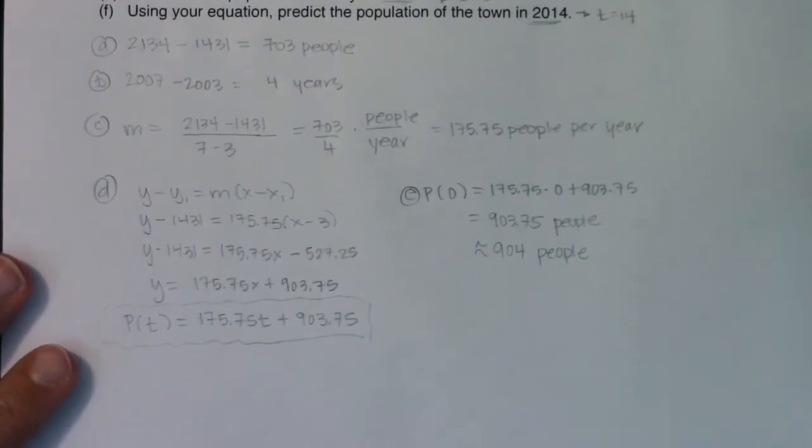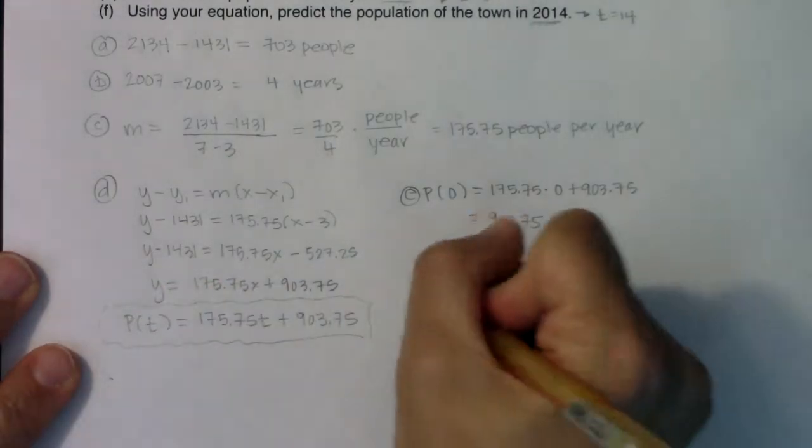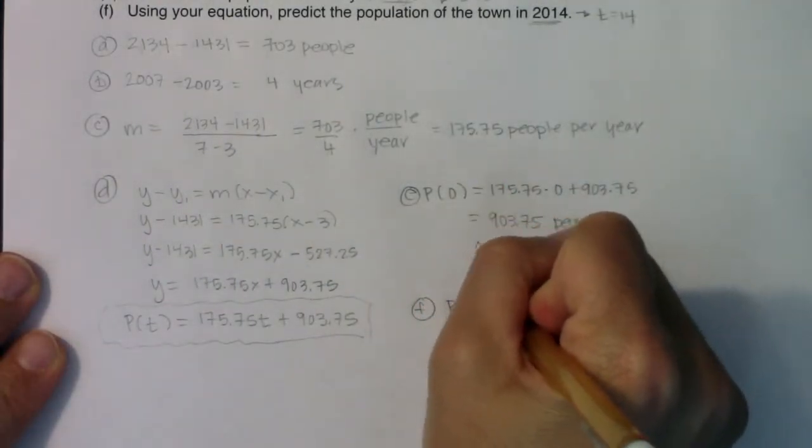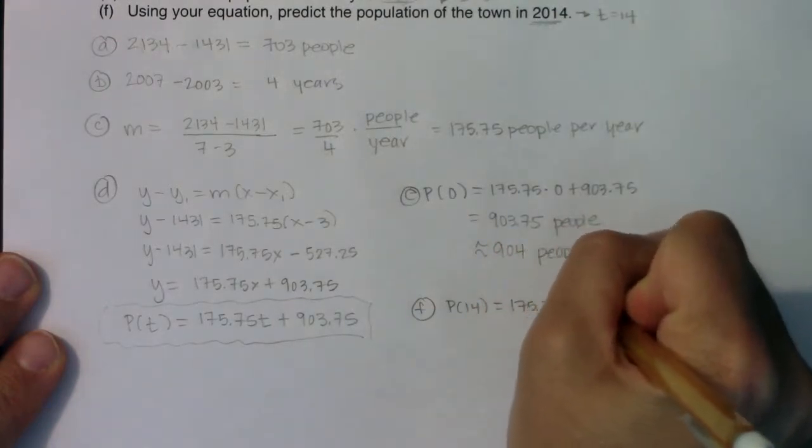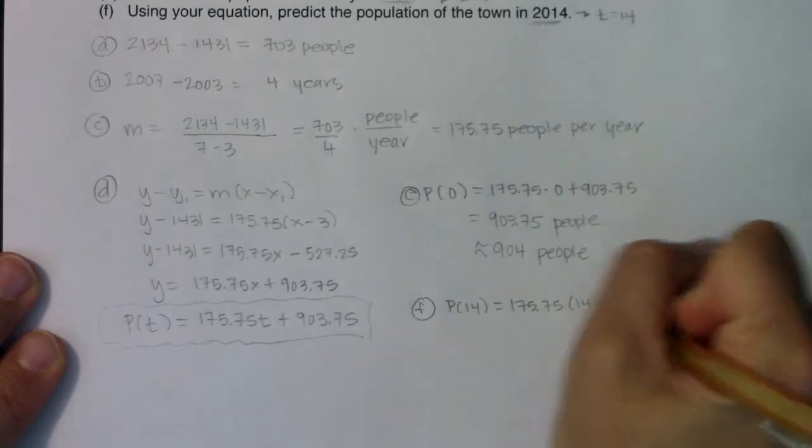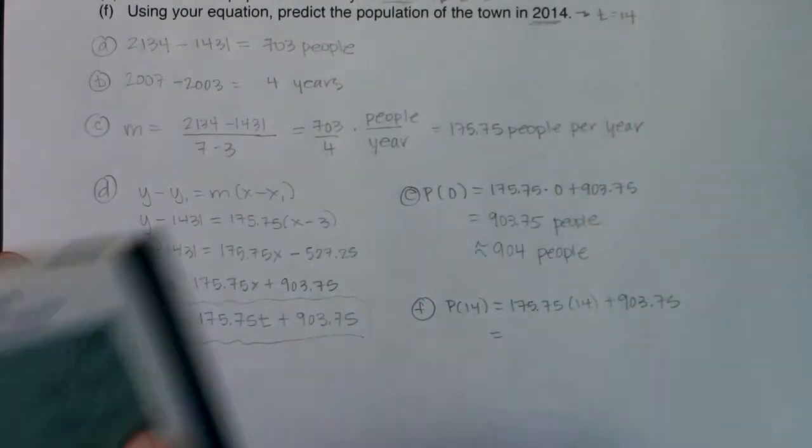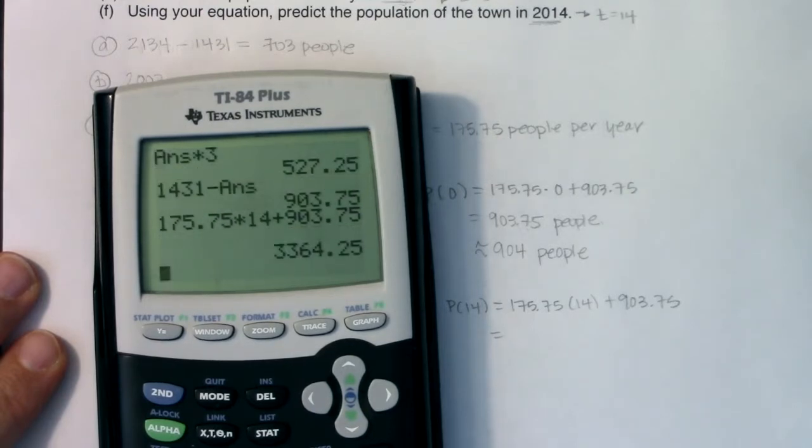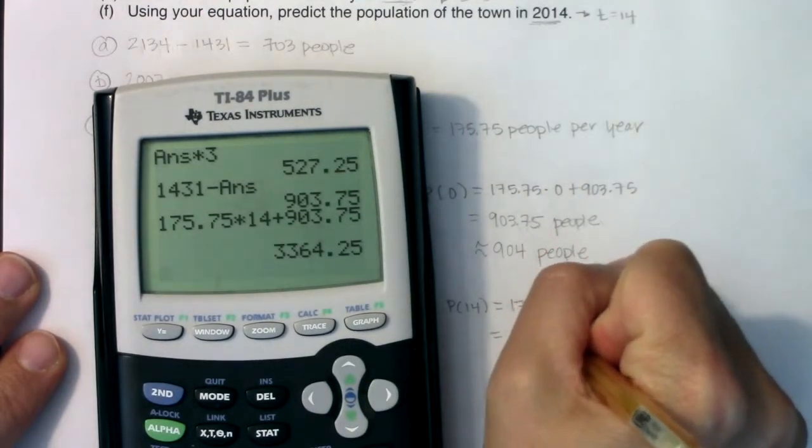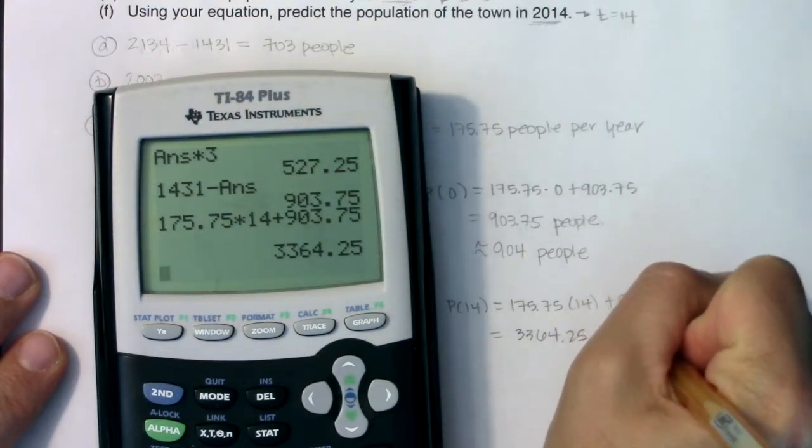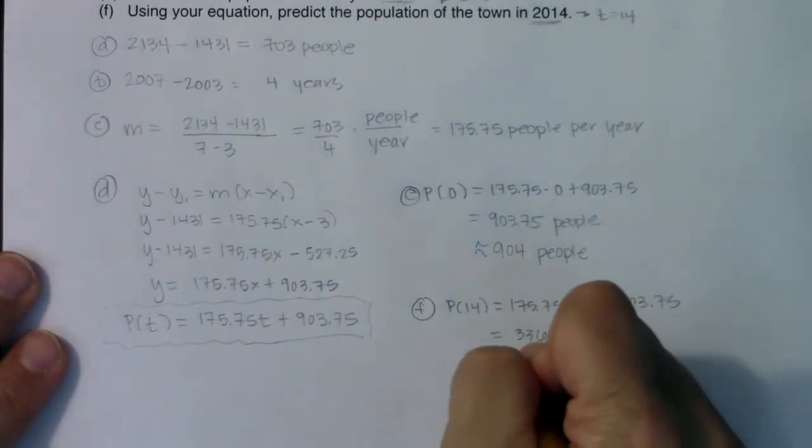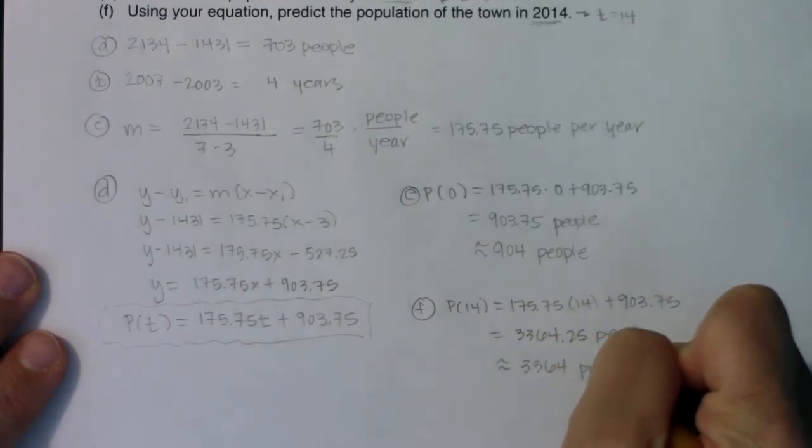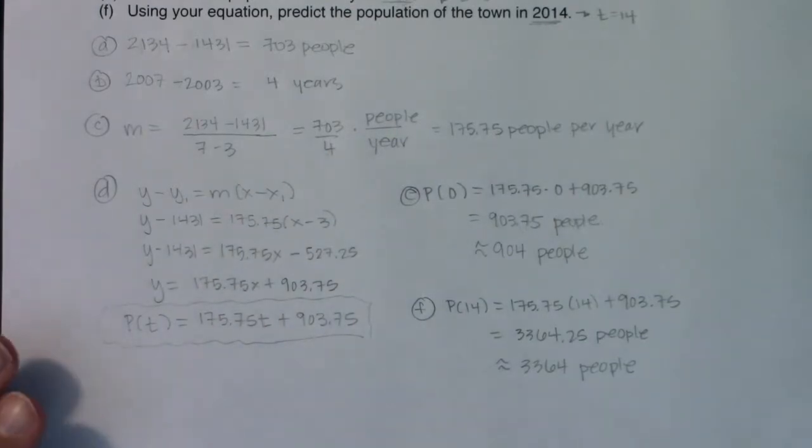For part F, we want P of 14. Well, that's going to be 175.75 times 14 plus 903.75. So let's see what we got here. I'm going to do 175.75 times 14 plus 903.75. So we would have about 3,364.25 people, or if I wanted to just approximate it, my best guess would be that in 2014 we'd have 3,364 people.